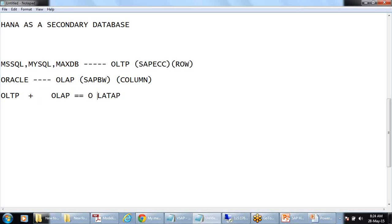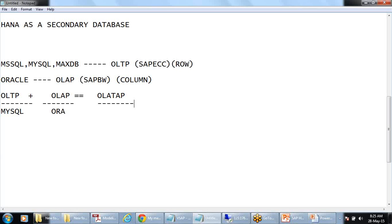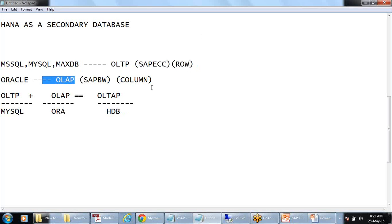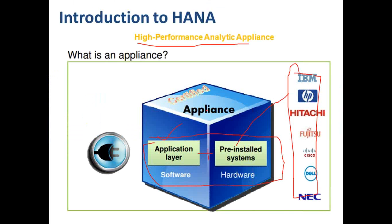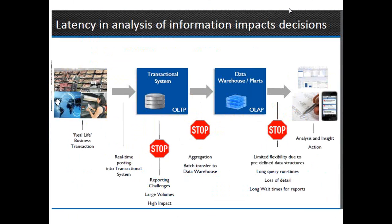Earlier, OLTP ran on third-party databases and OLAP ran on Oracle-type databases. Today HANA wants to create a single data platform supporting both. Instead of storing operational data in an ERP system, loading it into a data warehouse, and then reporting — a lengthy process — HANA supports both column store and row store for OLTP and OLAP applications. That is what hybrid database means.